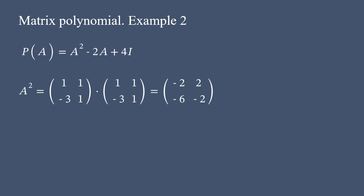Using usual matrix multiplication, we get the matrix with entries negative 2, 2, negative 6, and negative 2.